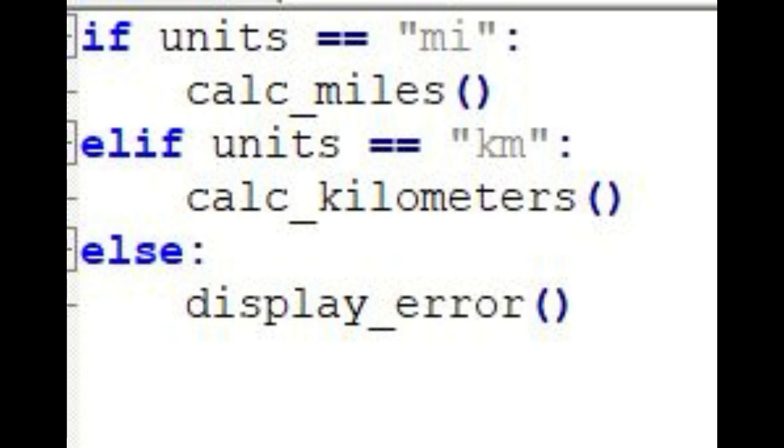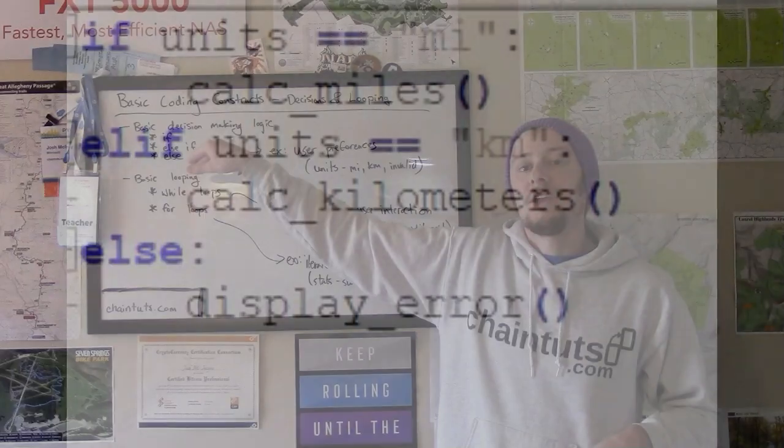So this would be an example of an if else statement. So if the user chooses mileage, call calculate miles. Else, if the user chooses kilometers, go ahead and calculate kilometers.